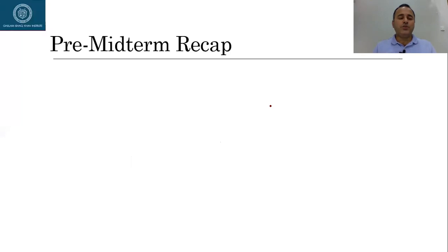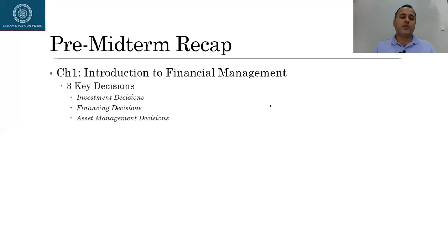Before proceeding to chapter number six I would like to give you a quick recap of whatever we covered before the midterm. We started with chapter number one, where we learned that finance managers make three key decisions: one is investment decision, number two is financing decisions, and number three is asset management decisions.